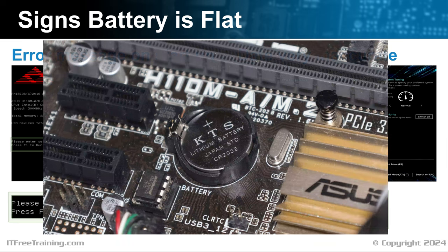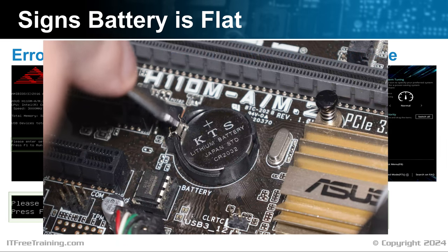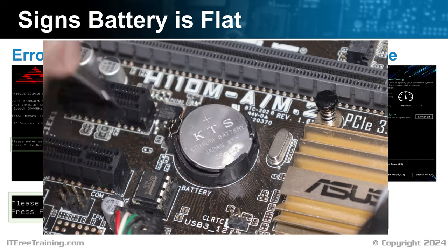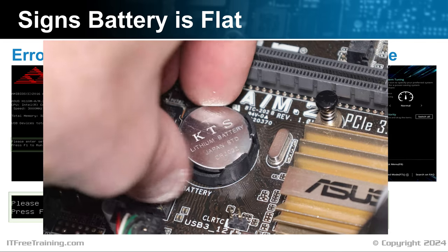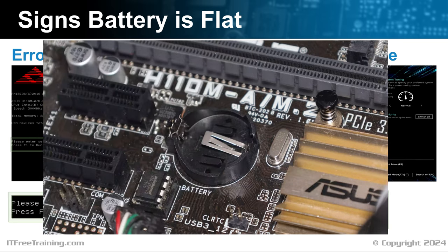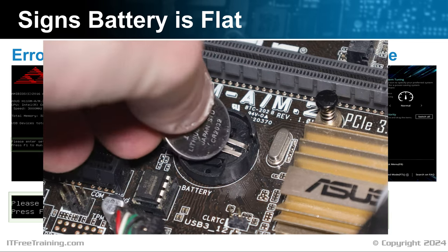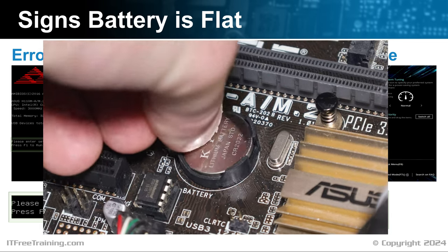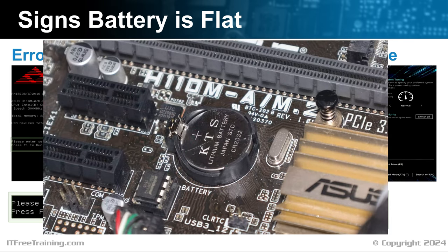Changing the battery is a simple matter. Use a flathead screwdriver to release the battery cover and remove the battery from the computer. Buy a replacement battery of the same type — button batteries like these are fairly common and should be easy to obtain. Once you have purchased a replacement battery, push it in until it clicks into place. Once the battery has been replaced, you will most likely have to set the date and time.